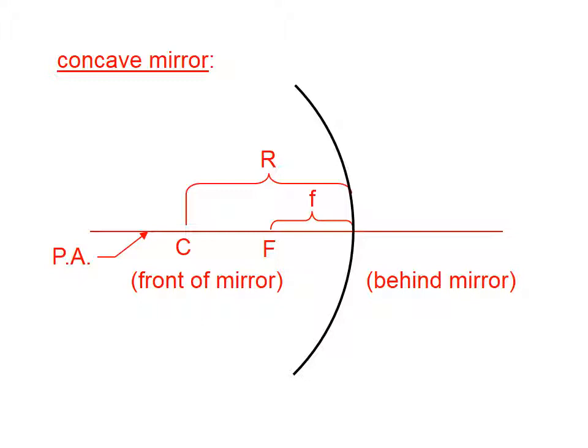As before, the distance between the center of curvature and the mirror is the radius of curvature, and the distance between the focal point, capital F, and the mirror is the focal length, lowercase f. For concave mirrors, again, this is not important for this lesson, but it will be later on. For concave mirrors, the focal length is positive.